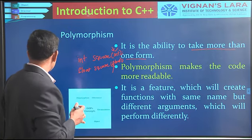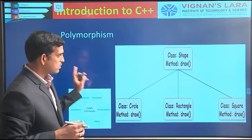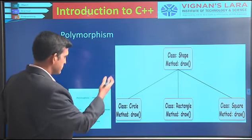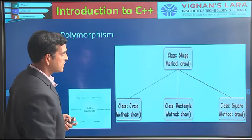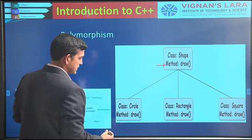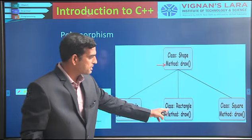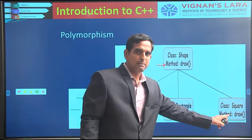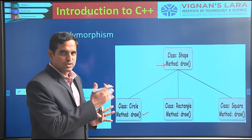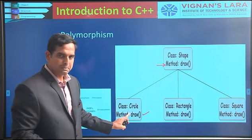Similarly, there are other options to implement polymorphism. Another way is using a draw method. This draw method can be implemented in multiple ways — it is implemented for circle, for rectangle, and for square. The same draw method could be used for multiple shapes.